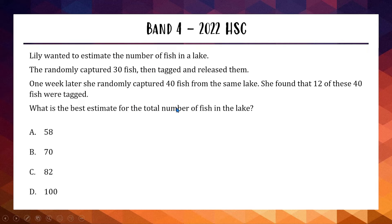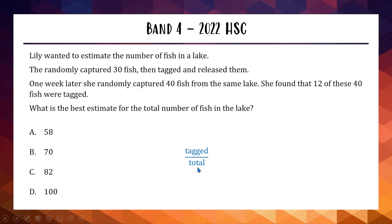Another Band 4 from the 2022 HSC — a capture-recapture question. We capture 30 fish, tag them, release them, then come back and capture 40 fish, of which 12 have our original tag. We need to estimate the total number of fish in the lake. My approach: set up two fractions of tagged fish out of total fish — one for the full population and one for the second-week sample.